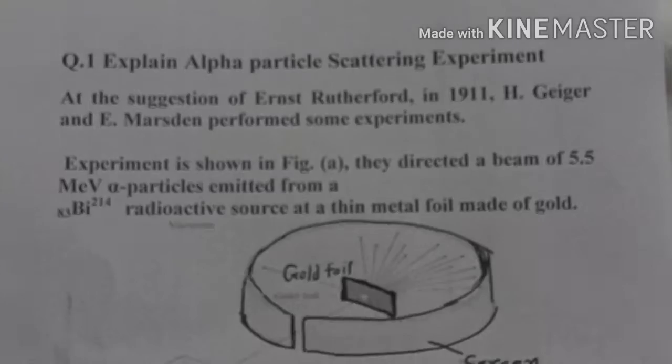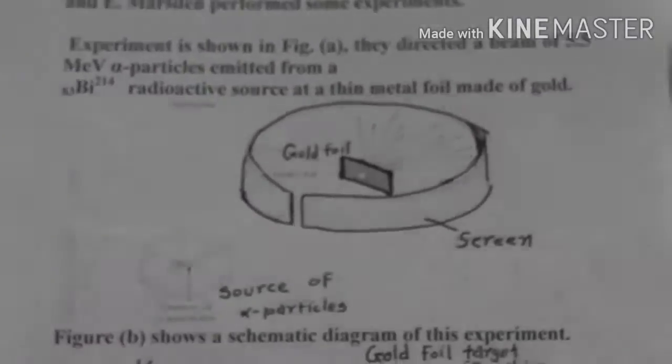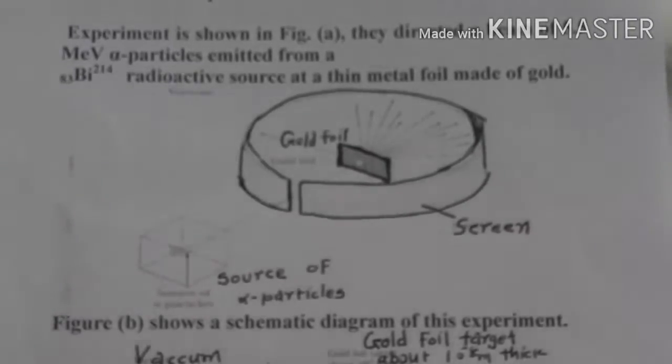Here, the well-known experiment of Rutherford, actually Rutherford suggested this experiment to his students Geiger and Marsden and they performed this experiment. The experimental setup is given in the figure. You can see they directed a beam of 5.5 MeV alpha particles which are emitted from bismuth radioactive source.